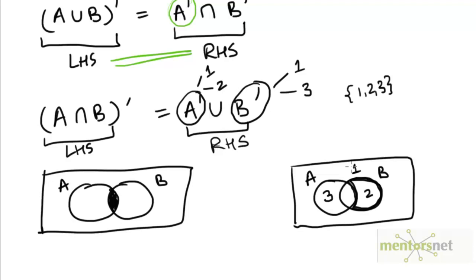Regions 1, 2, and 3 together make up A complement union B complement, and you can see that these three regions cover everything outside of the shaded region. This means that the set on the right hand side is actually the same as the set on the left hand side. So this proves the second of De Morgan's laws.